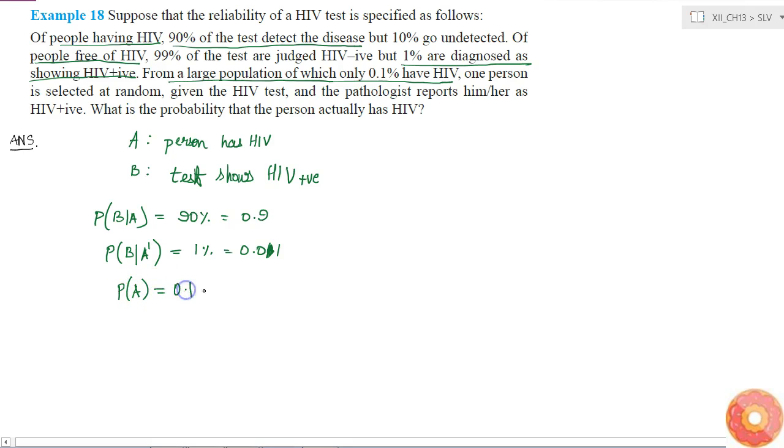Which is equal to 0.1%, which is 0.001. One person is selected at random, so probability of selecting the person having HIV is 0.001.